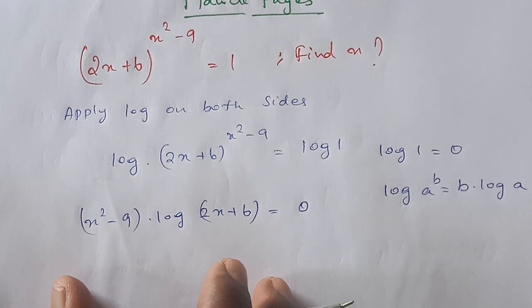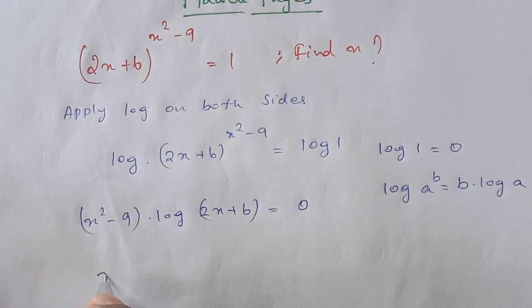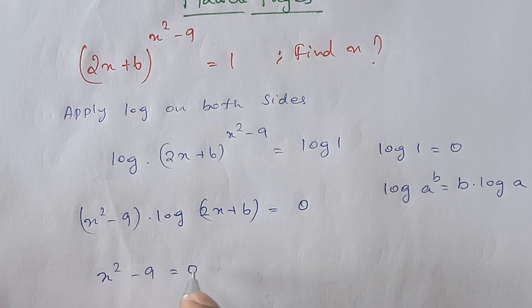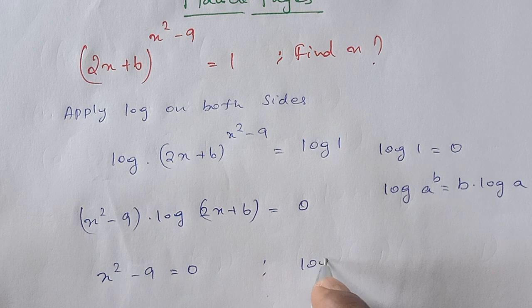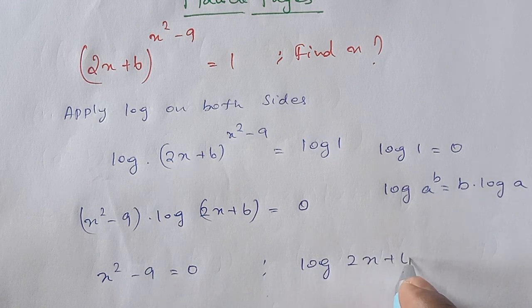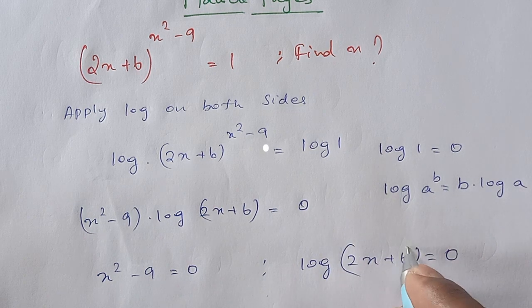We can split this now. So we can say x squared minus 9 is equal to 0, or log (2x plus 6) is equal to 0.